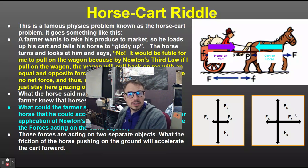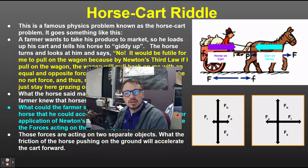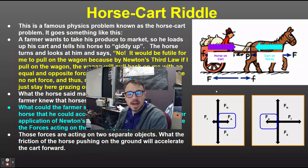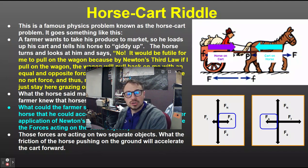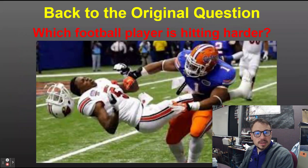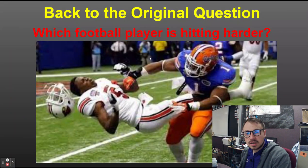The frictional force is what causes the horse to move forward — they're pushing off the ground, and the ground is pushing the horse forward. That's what causes the acceleration. Notice that I've got an action and reaction. They don't cancel because they're acting on two different objects. So the horse will be able to accelerate the cart.